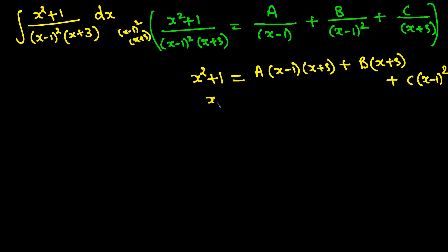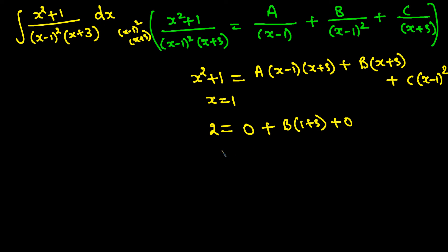Setting x equal to 1: the left side gives 1 squared plus 1 equals 2. The A term becomes 0, and the C term becomes 0, leaving B(1 plus 3) equals 4B. So 2 equals 4B, and dividing both sides by 4 gives B equals 1/2.